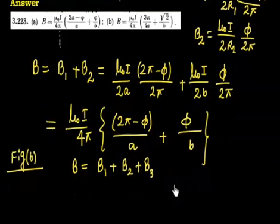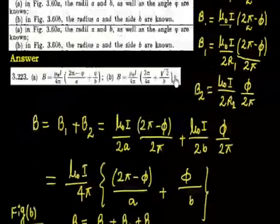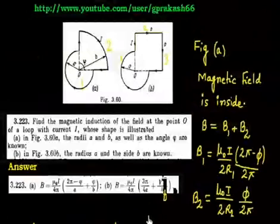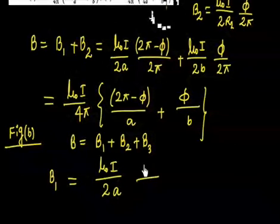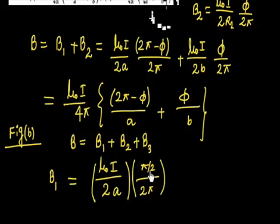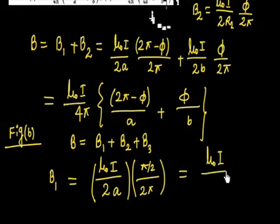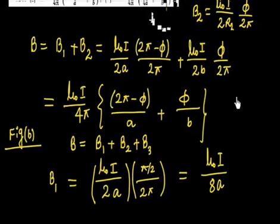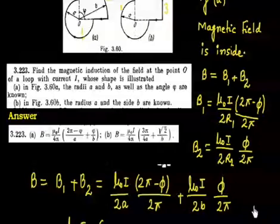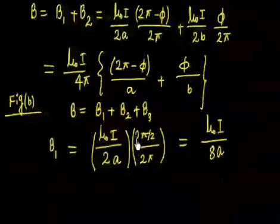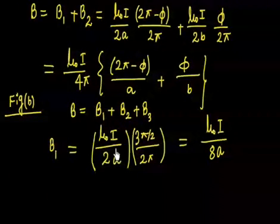B1 is due to the first curved arc. Looking at figure B, the arc does not span 90° — it spans 3π/2 (that is 2π − π/2). The radius is a. So B1 = (μ₀I / 2a) × (3π/2) / 2π = 3μ₀I / 8a.